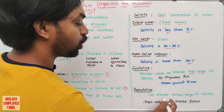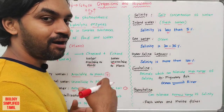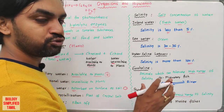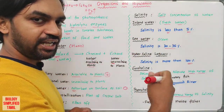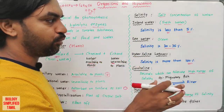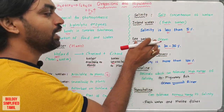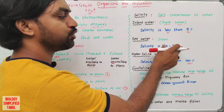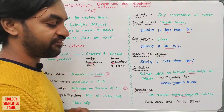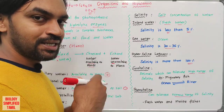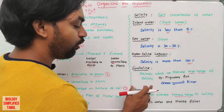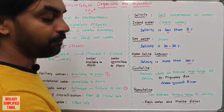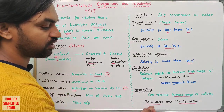Stenohaline organisms can tolerate only a narrow range of salinity — for example, 5% to 7-8% only. Fresh water fish are stenohaline and live in fresh water; marine fish live in ocean water at 32-35% salinity. Fresh water fish and marine water fish are separate — marine fish cannot survive in fresh water and vice versa.